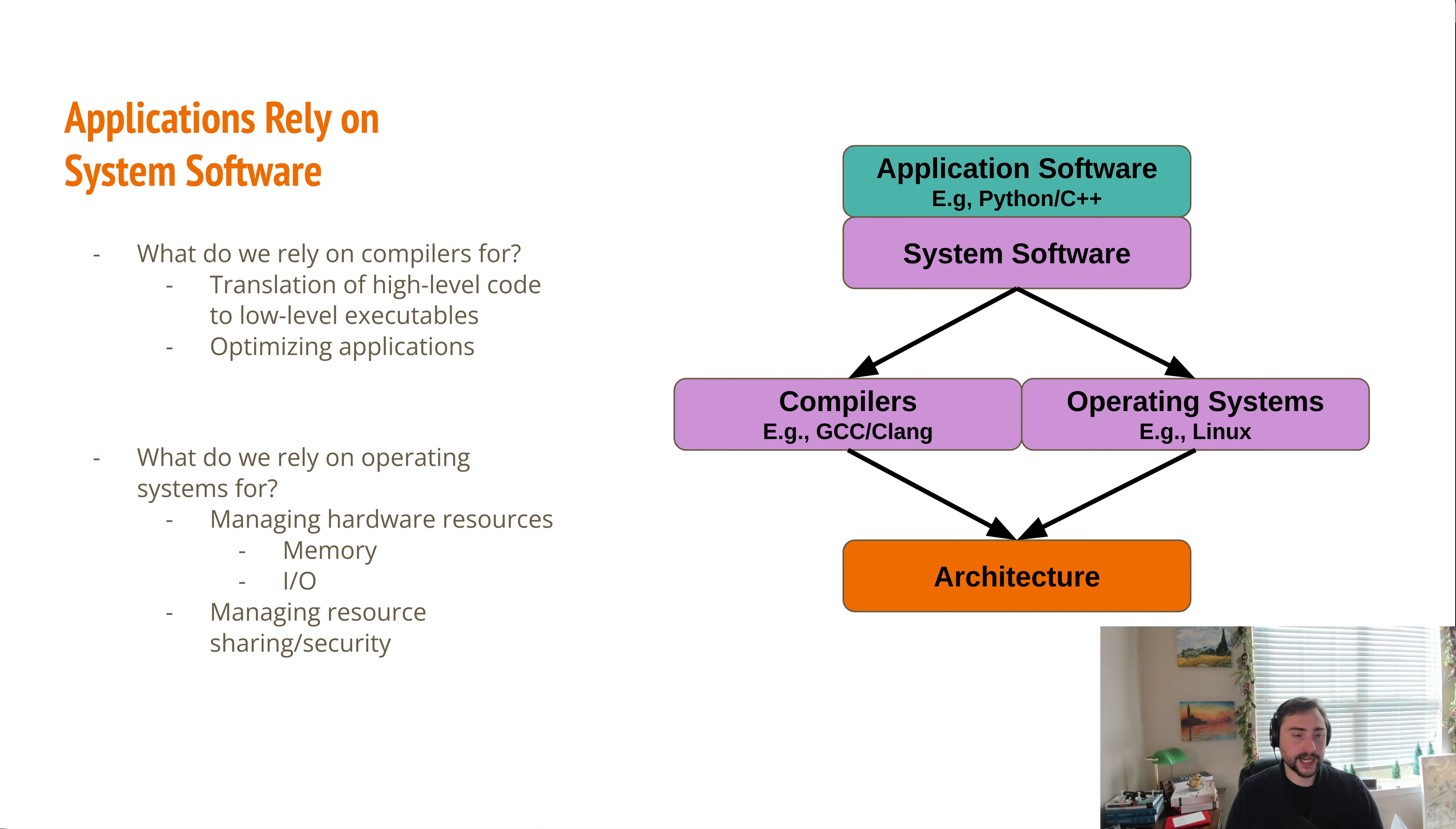Now another thing we rely on operating systems for is managing resource sharing and security. We're often running multiple applications or processes at the same time, so we rely on our operating systems to fairly and efficiently schedule these processes. And we also want to make sure that if we're on a multi-tenant system, so we have multiple people using the same processor, that we have some sort of process isolation. So different users can't just read each other's data or kill each other's processes.